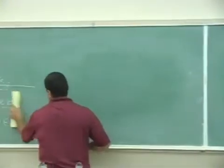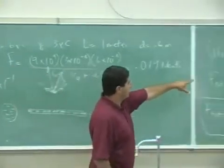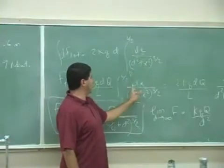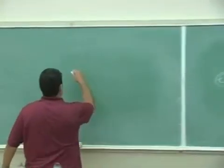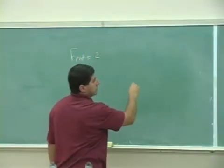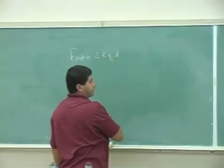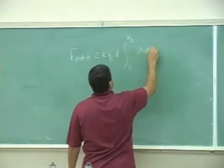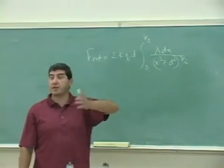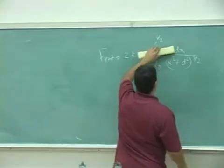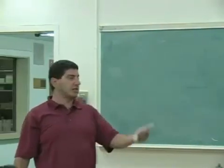Now let's do the integration. The setup is about the same until you get to the stage where you write dq = λ dx. The difference is that λ doesn't come out of the integral — it stays in as κx. So it looks like: 2kq times d times the integral from 0 to L/2 of λ dx over (x² + d²)^(3/2), and then λ = κx, where κ is a constant we'll need to find. We take κ out of the integral.